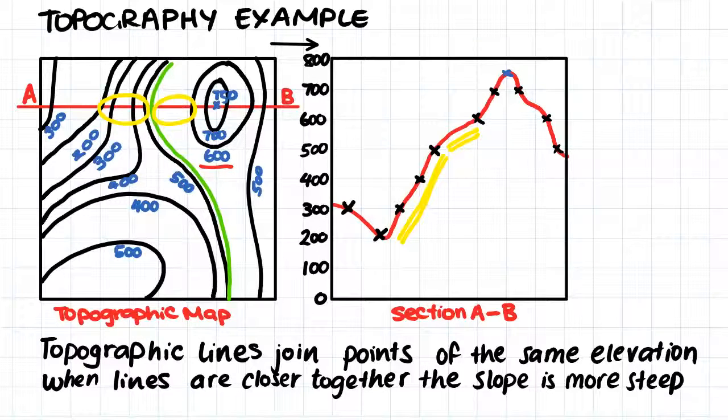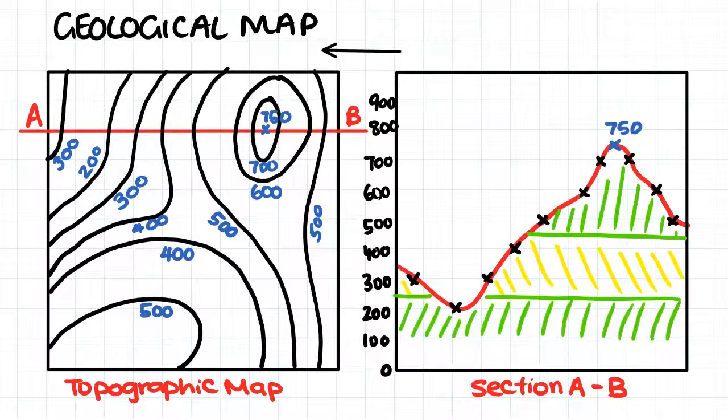So now we understand topographic mapping, I will move on to geological mapping. Geological mapping is concerned with what is actually happening beneath the Earth's surface. What sort of rocks do we have, and how are they positioned?